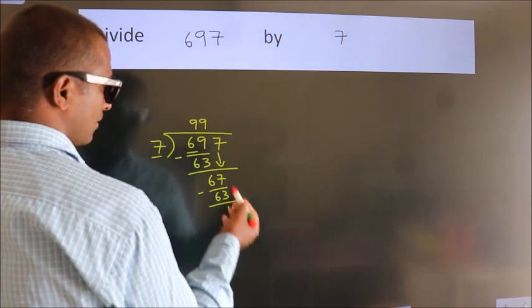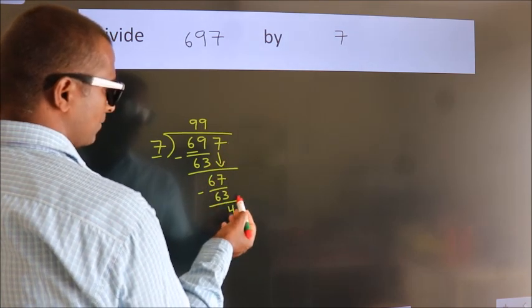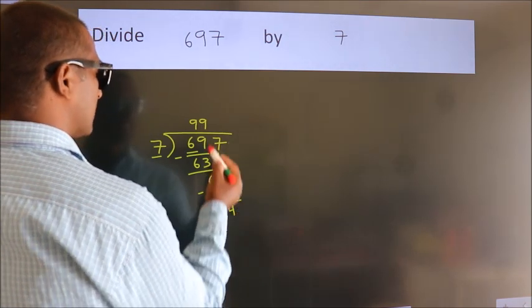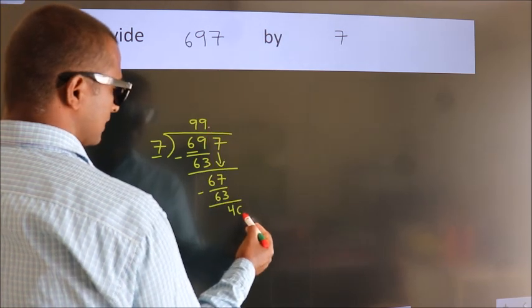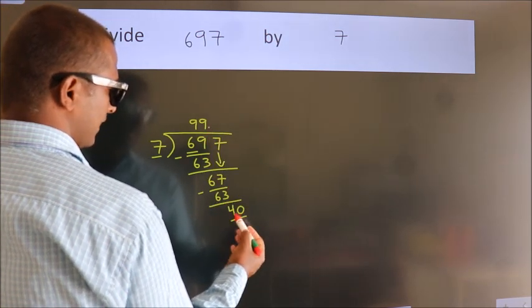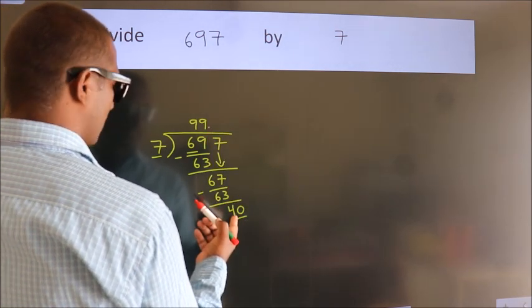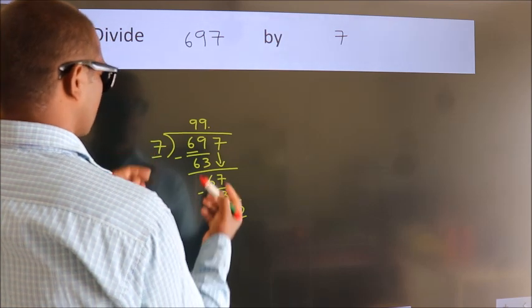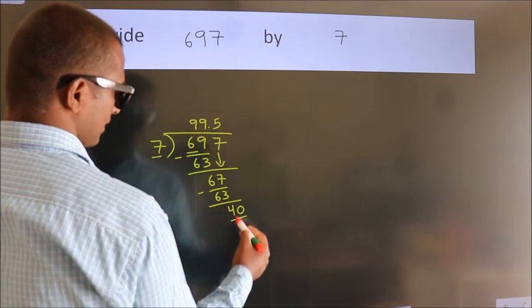After this, no more numbers to bring down. So what we do is we put a dot and take 0. So 40. A number close to 40 in the 7 table is 7 fives, 35.